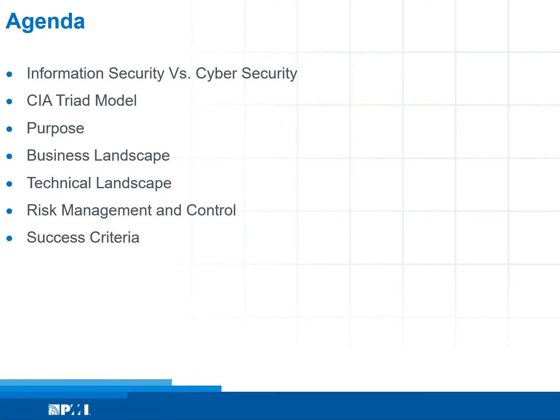The agenda of today's session is to clarify information security versus cyber security, review the CIA triad model, review purpose, review business landscape versus technical landscape, overview of risk management and control, and finally project success criteria.